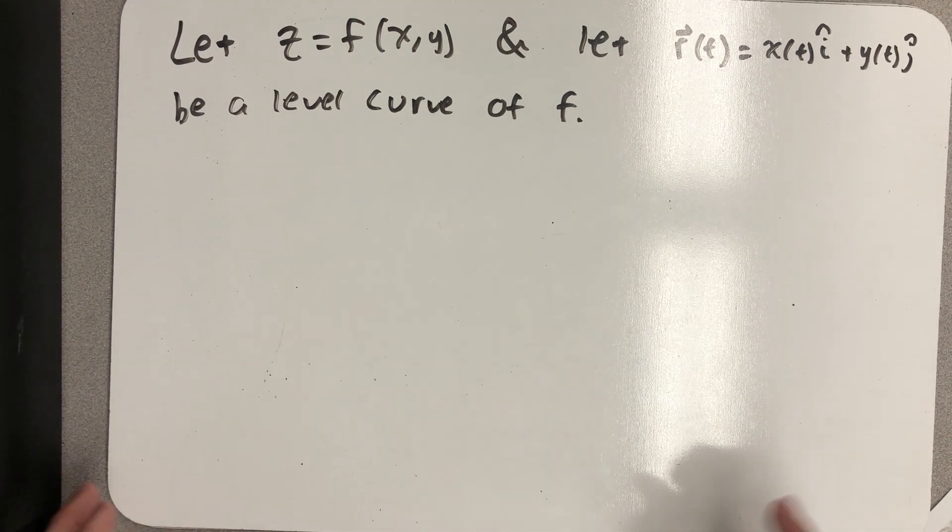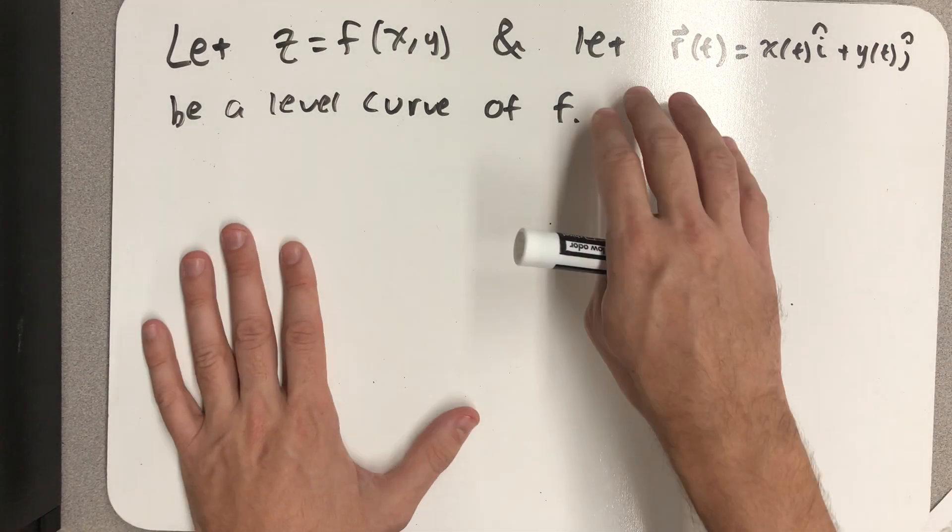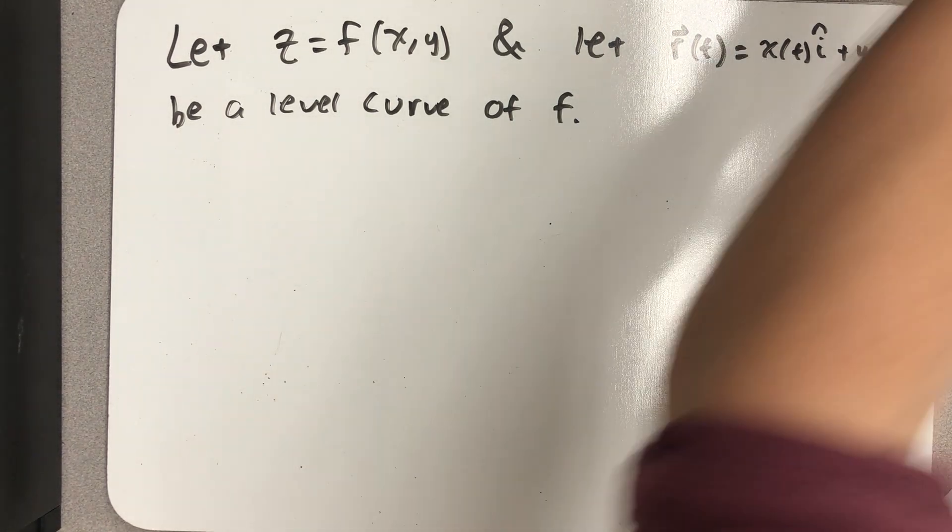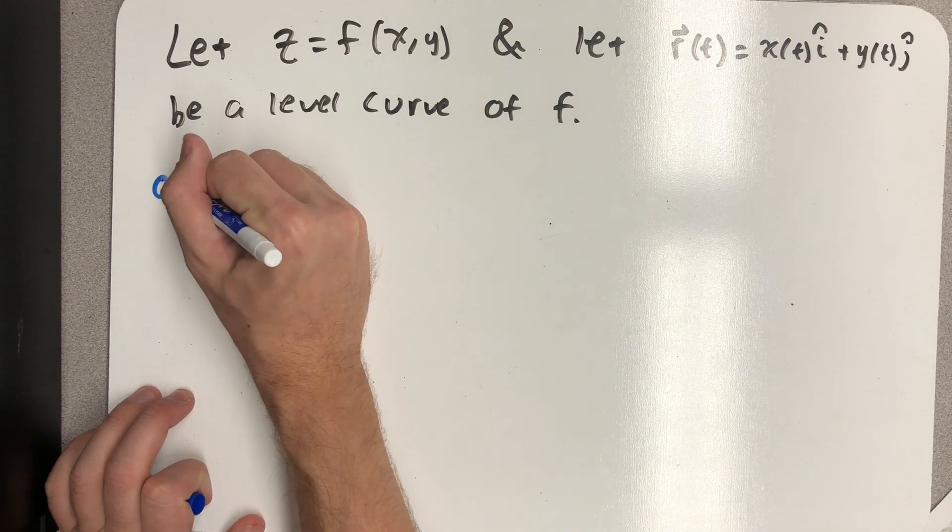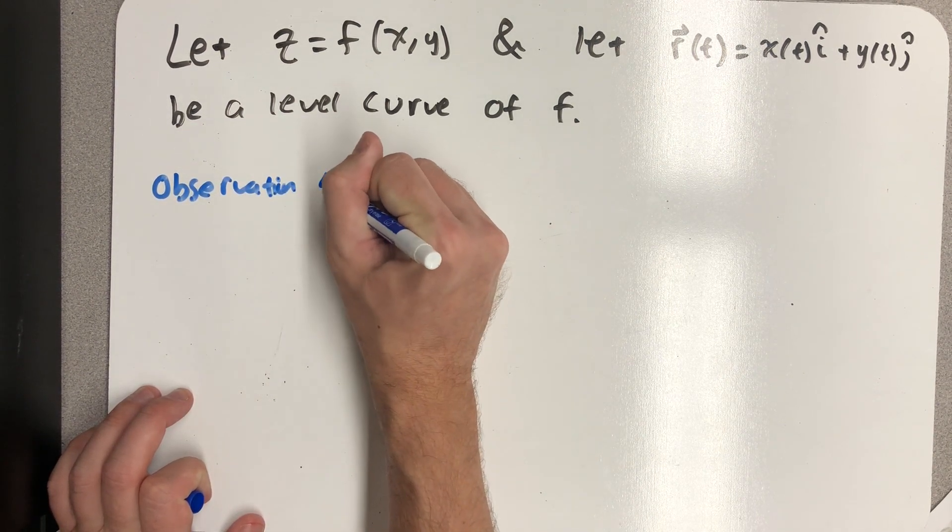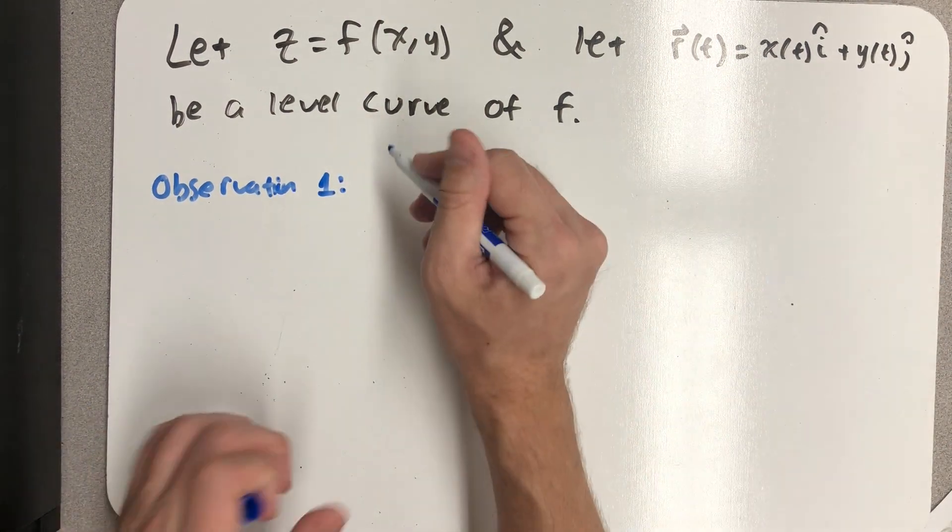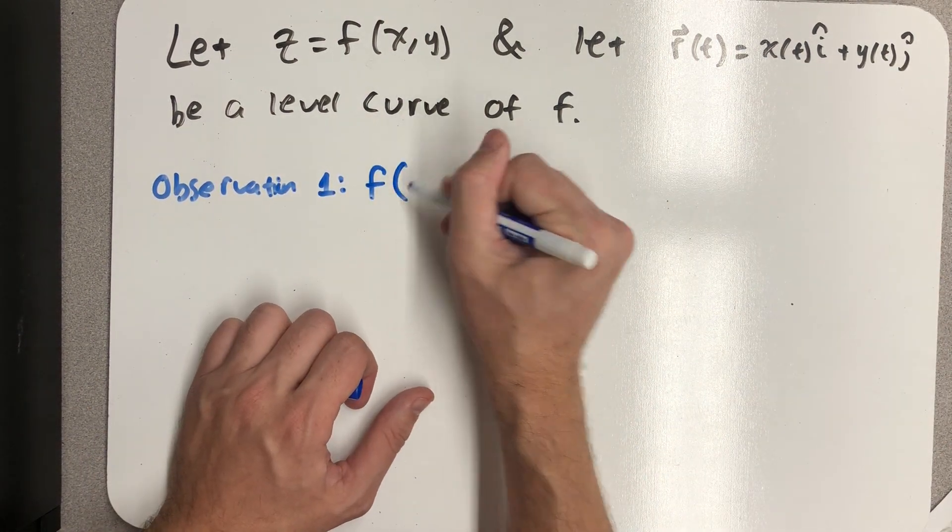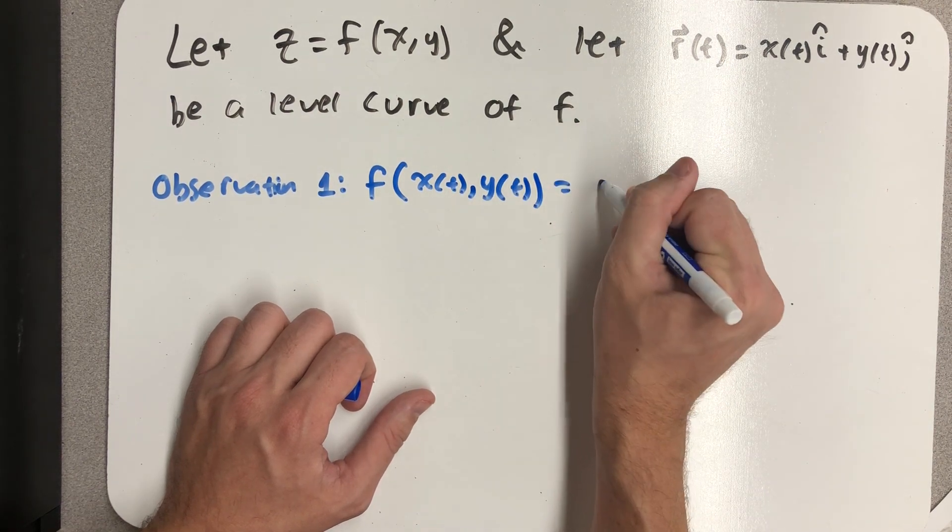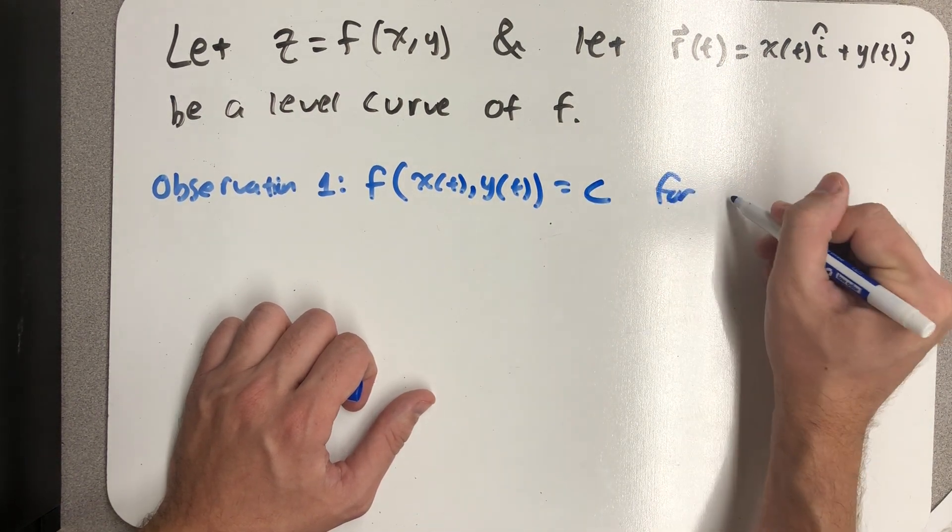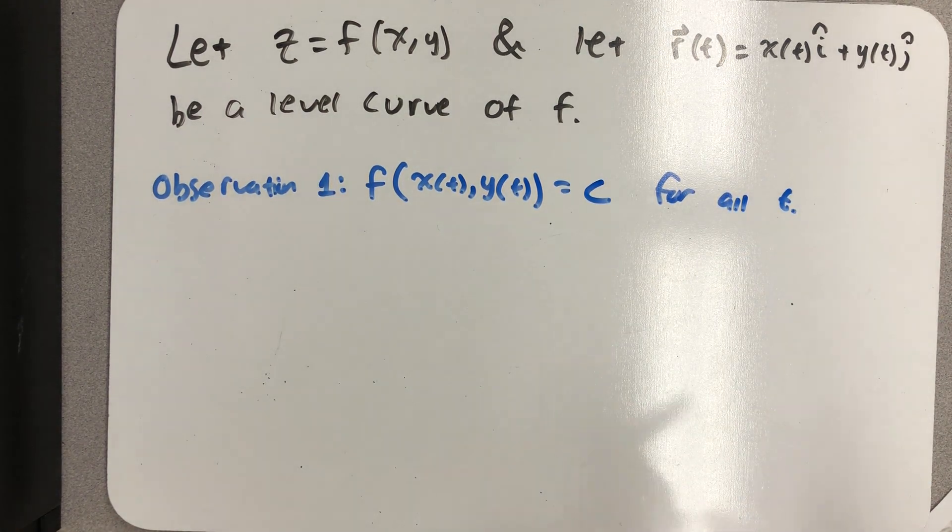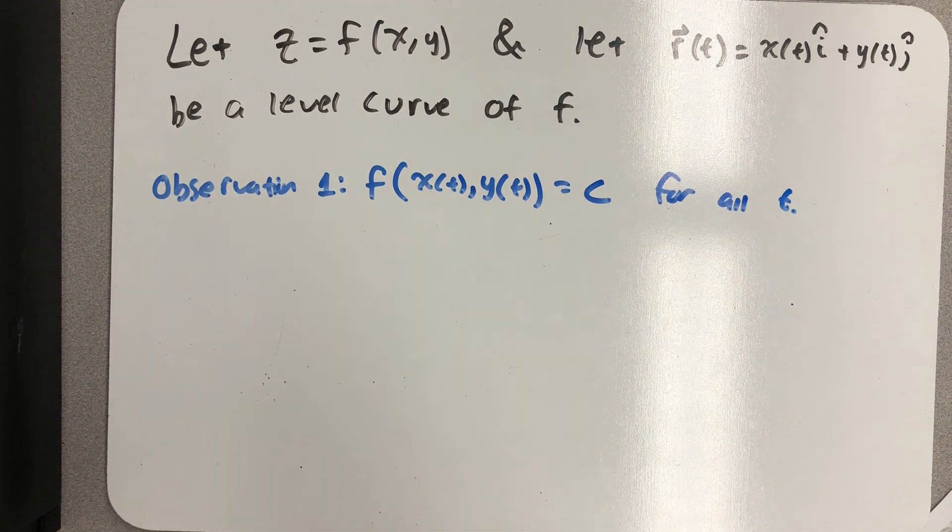Let's say we have a function z equals f of xy, and a parameterization for some level curve of f. Let's make a few important observations. The first observation is that because this is a level curve, if I substitute x of t comma y of t into the function, I get out a constant for every value of t. That's what level curves are - x comma y's that give a constant output.